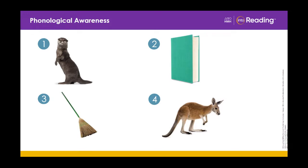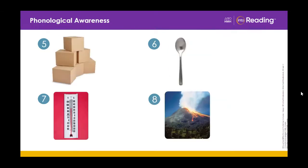The fourth picture is kangaroo. How many syllables are in the word kangaroo? Three syllables. Picture number five: boxes. How many syllables are in the word boxes? Two syllables. Very good.